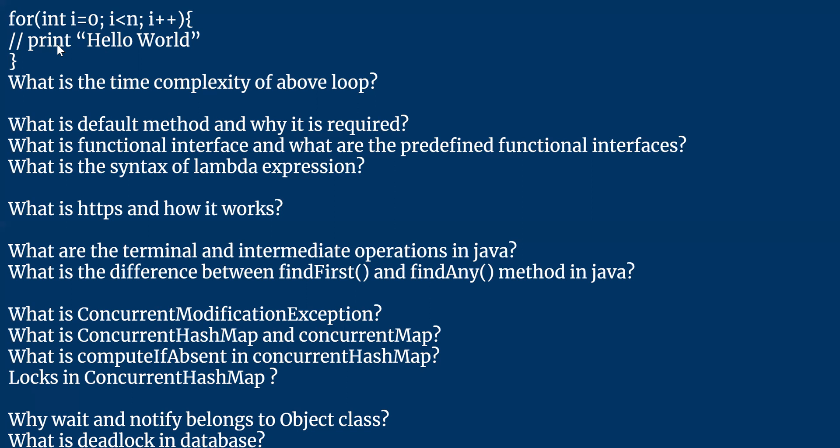If n is 3, what should be the number of iterations? If it's one loop, there will be a maximum of 3 iterations. If there are nested loops, it will be 3 squared, meaning a maximum of 9 iterations.